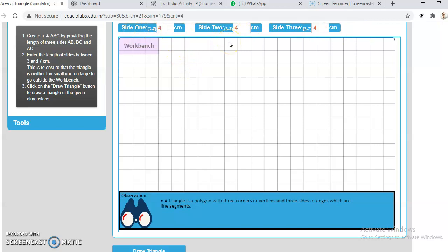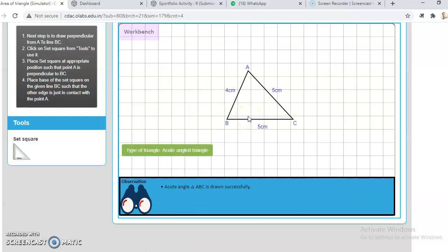These all the sides will be between three to seven, so we can vary here. We will take one as five and the other one is also five, and then we will draw a triangle. This triangle has been drawn, so you can see that we are having a triangle whose two sides are same, five centimeters, and one is four centimeters.